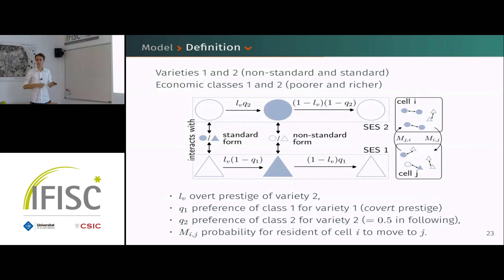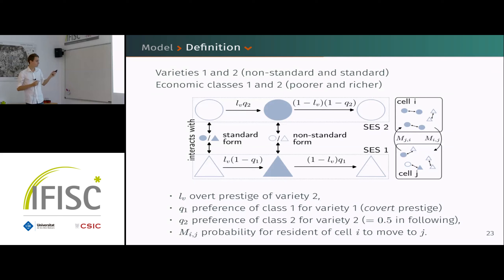We have q_1, the preference of class one for variety one (their own variety), and q_2, the preference of the richer class for variety two. To have interesting interaction patterns, we have a mobility matrix — the probability for someone residing in cell i to move to cell j and randomly interact with someone there.